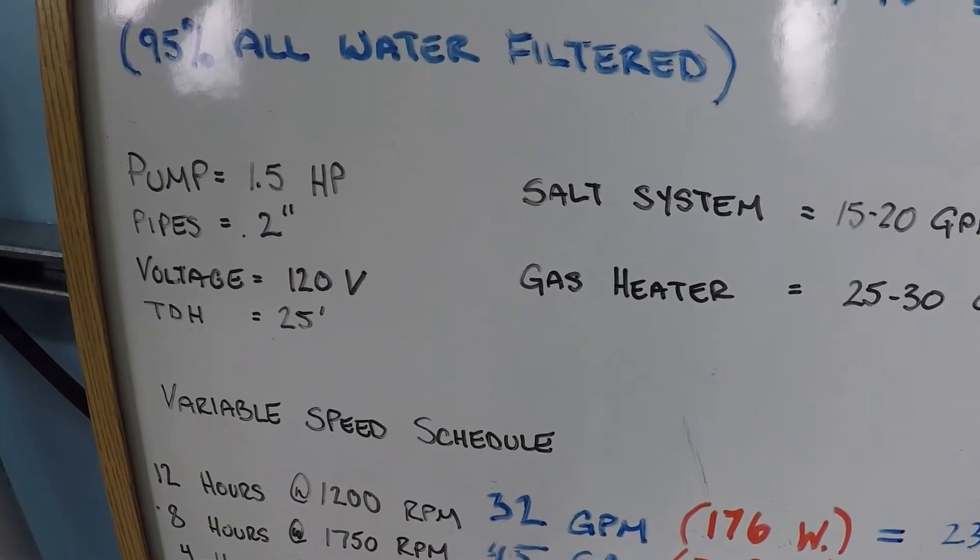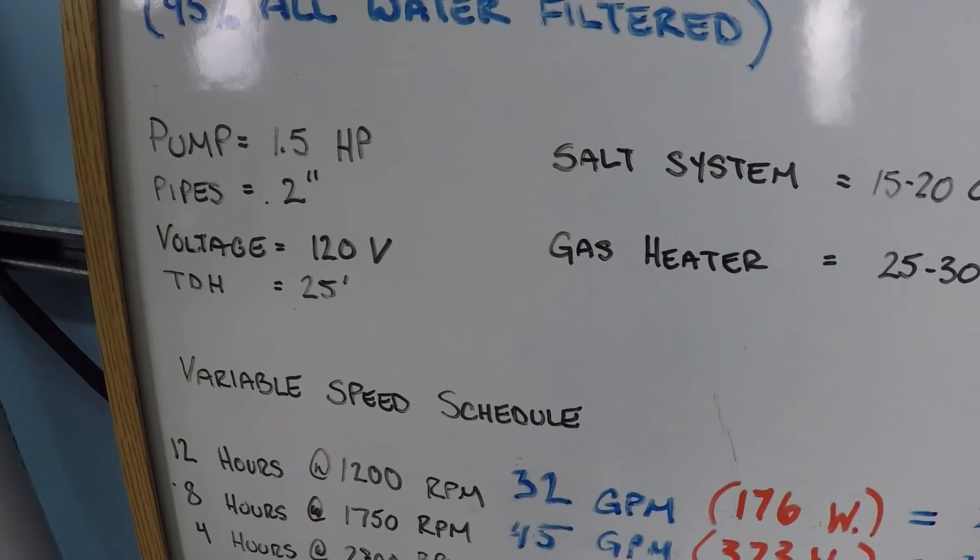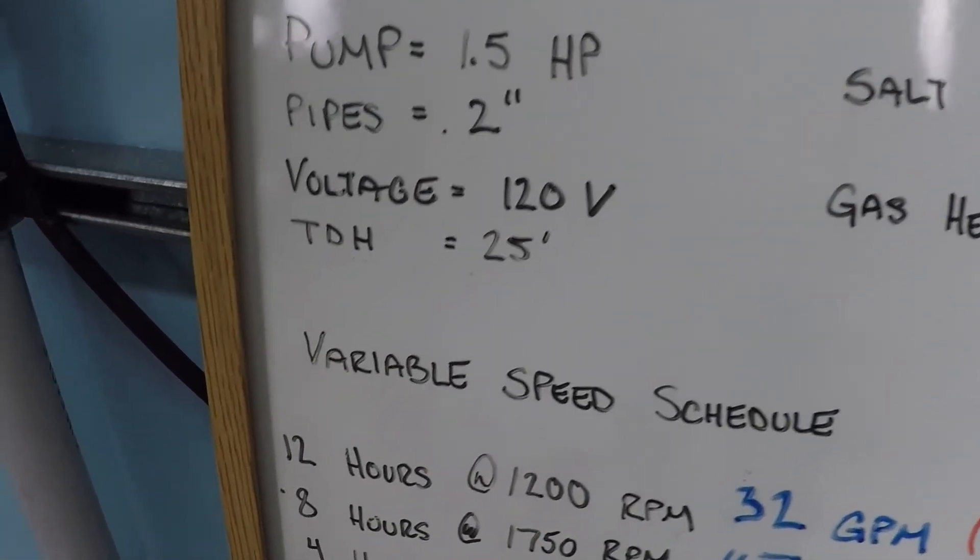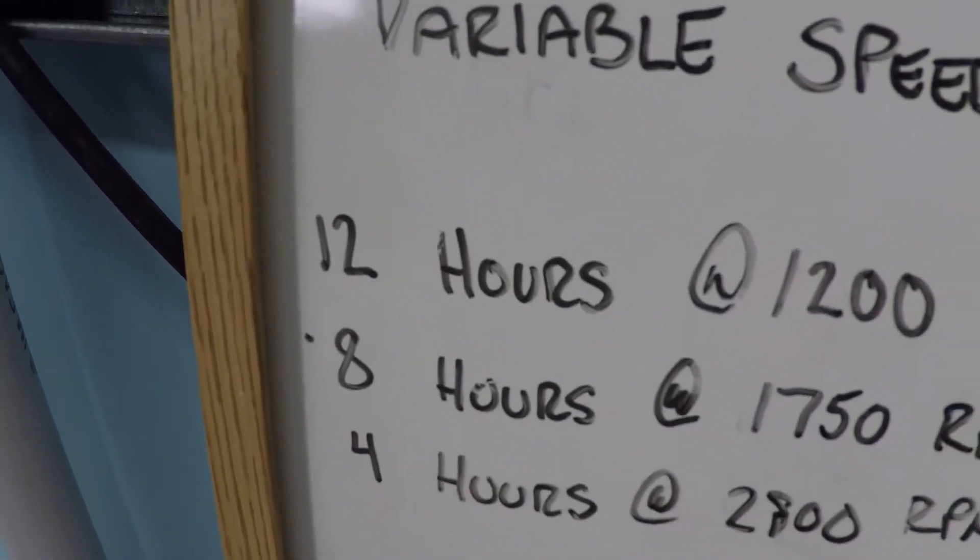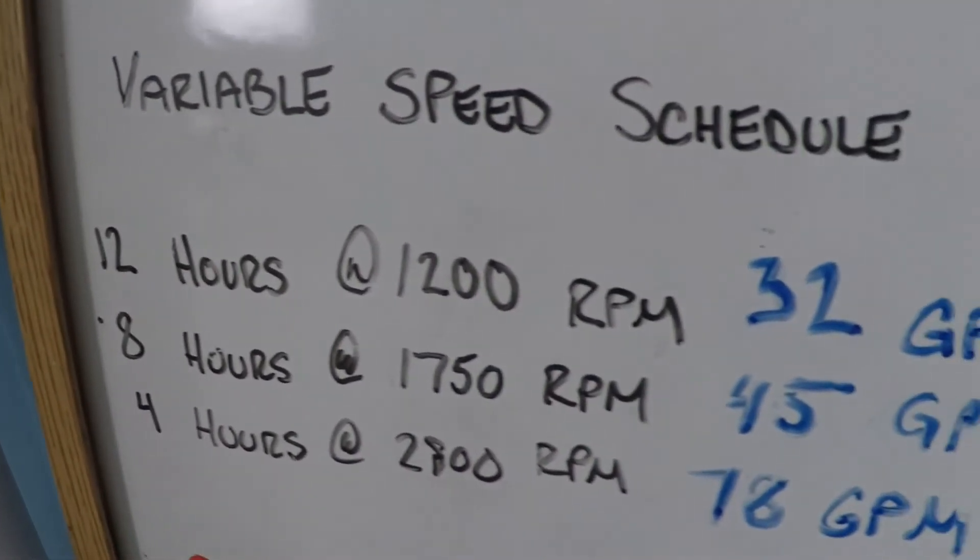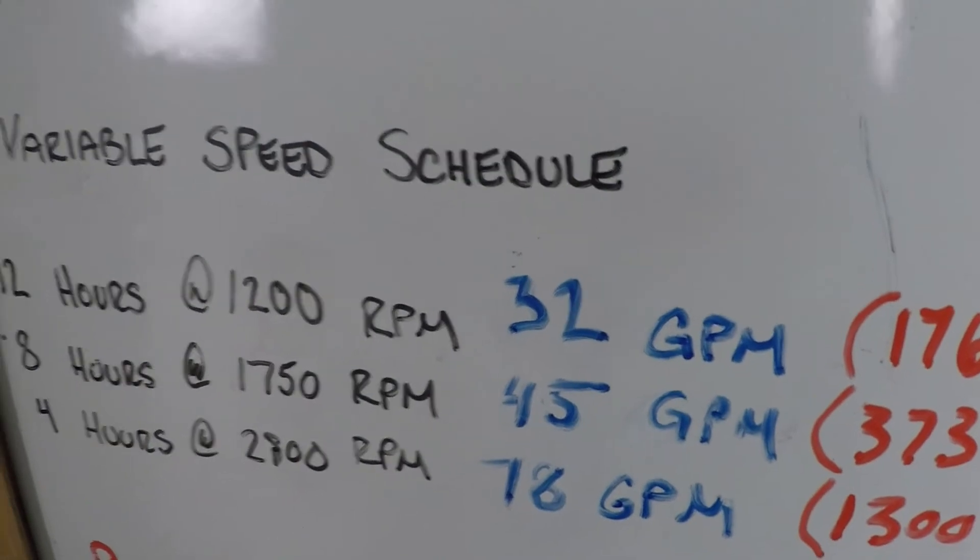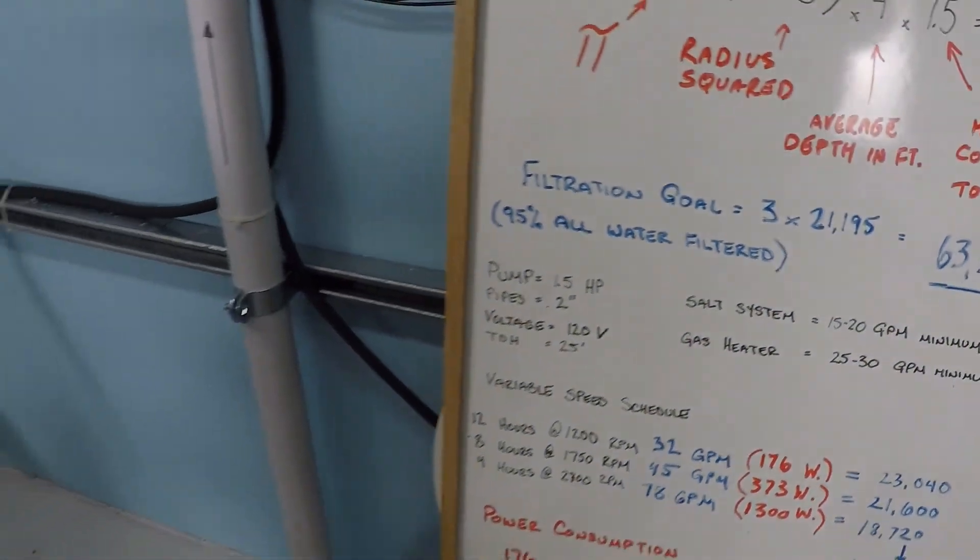Now swimming pools are more dynamic than this. We can't just set the RPM low and leave it there 24 hours a day. It really needs periods at medium and high speeds as well. So let's take a look at this. Eight hours at 1750, we should be able to get about 45 gallons per minute.